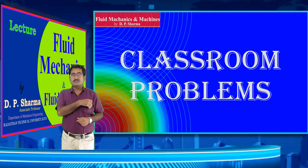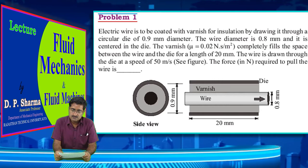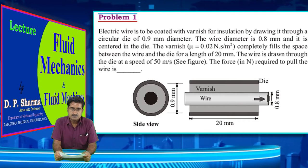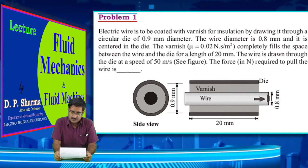Now let's solve some problems. Problem 1: An electric wire is to be coated with varnish for insulation by drawing it through a circular die of 0.9 mm diameter. The wire diameter is 0.8 mm and it is centered in the die. The varnish has mu equals 0.02 N·s/m² and completely fills the space between the wire and the die for a length of 20 mm. The wire is drawn through the die at a speed of 50 m/s. Determine the force required to pull the wire.